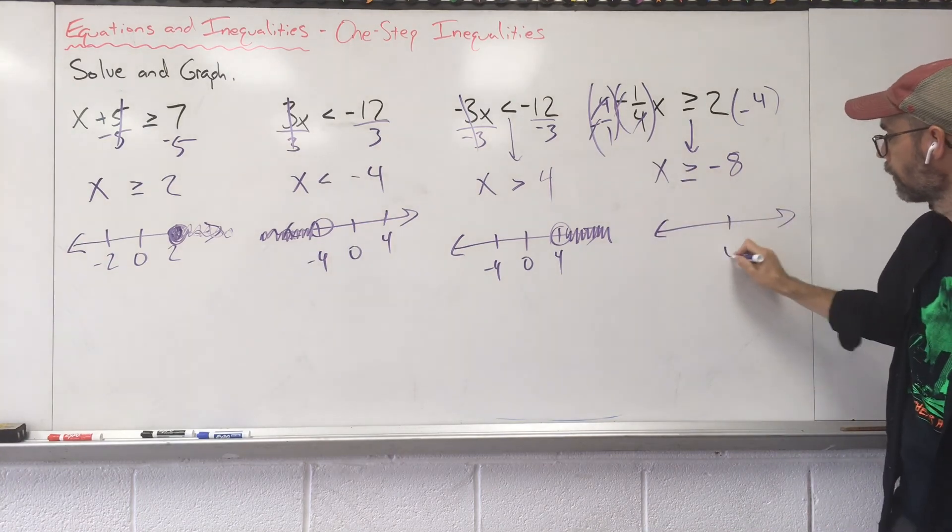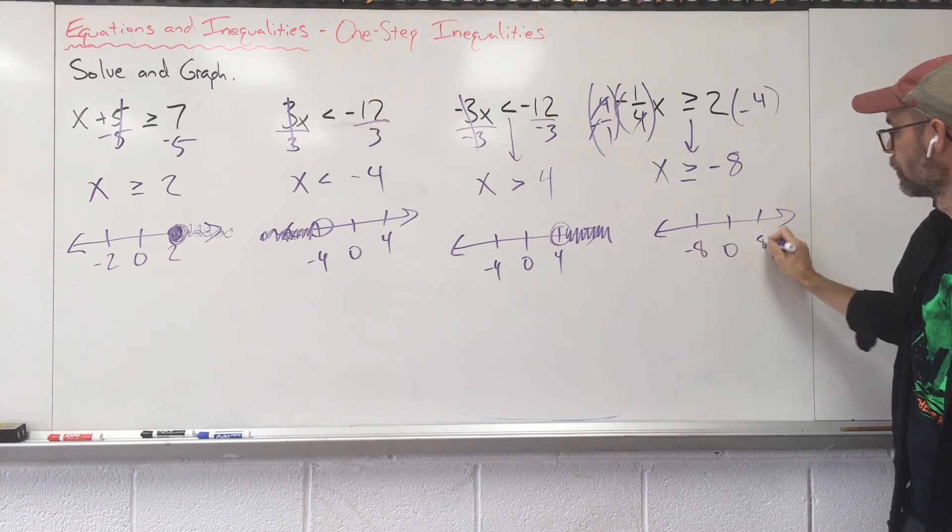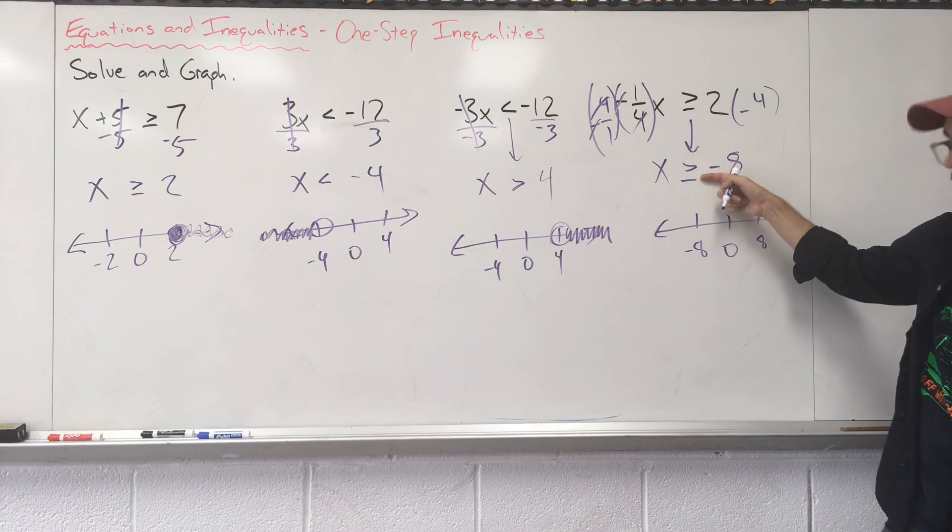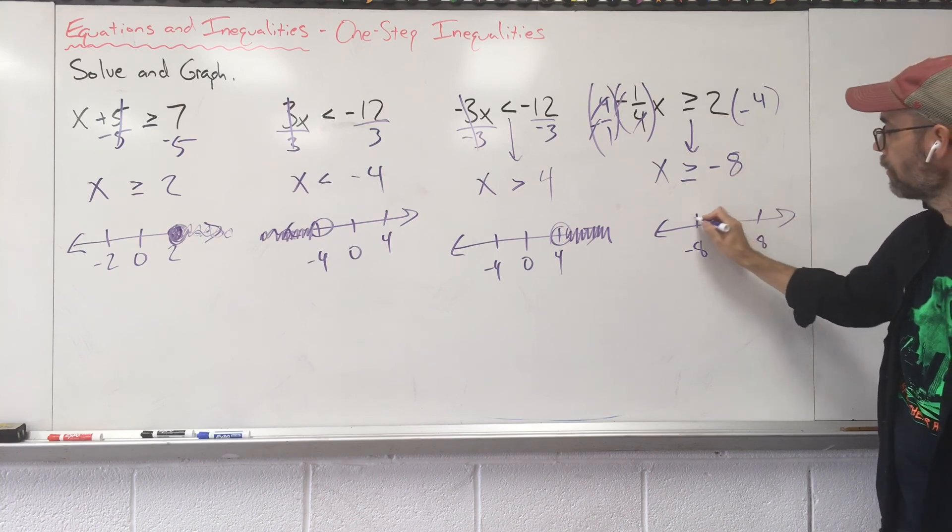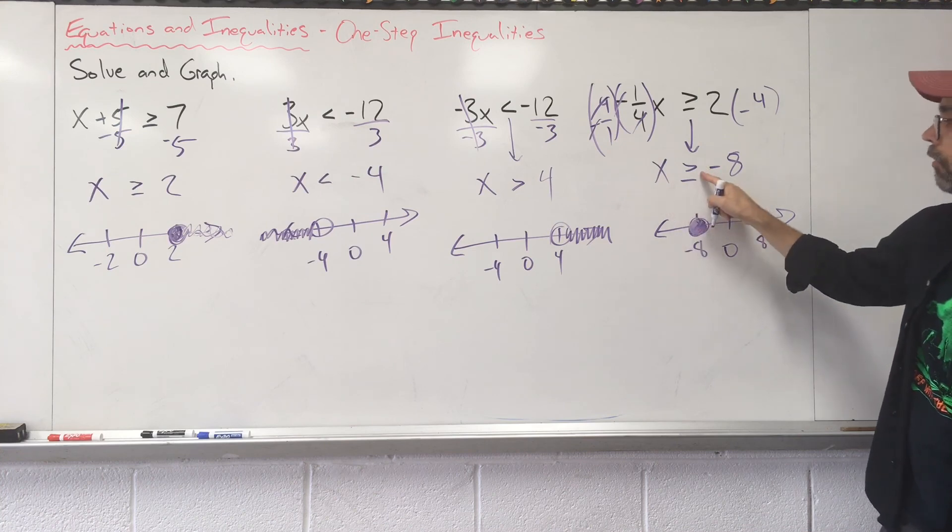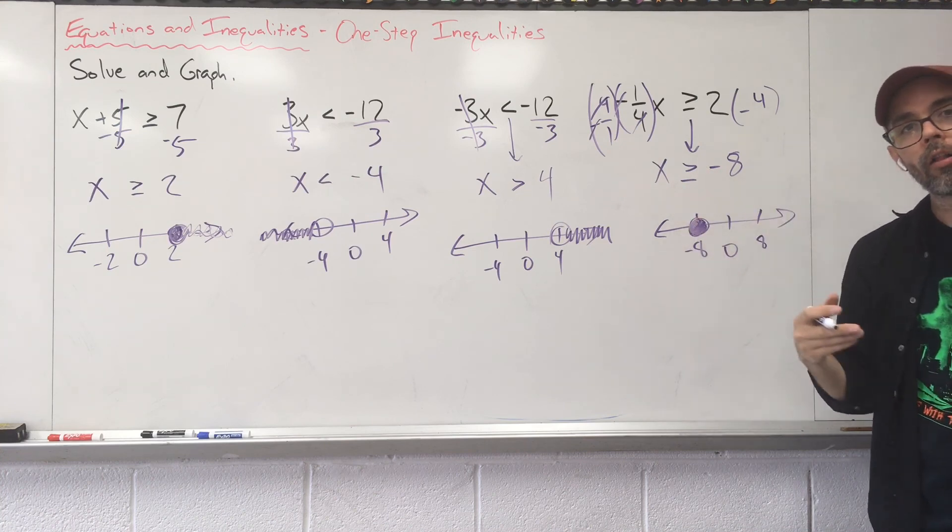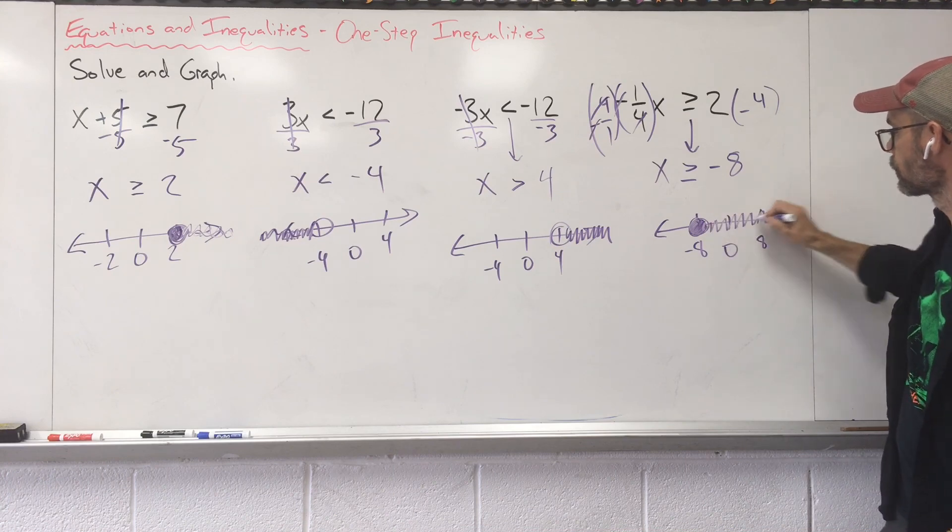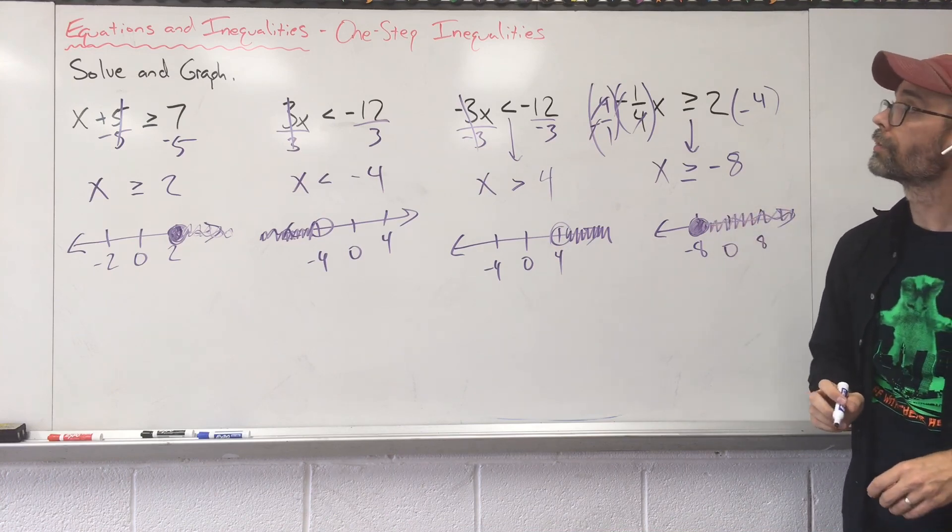Now when we graph, open circle, closed circle? There's an equal sign. So at that negative 8, we're going to fill that in. X is larger. X is greater. All of our bigger numbers off to the right. And that's graphing one-step inequalities.